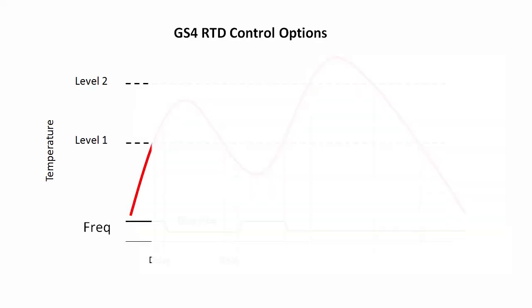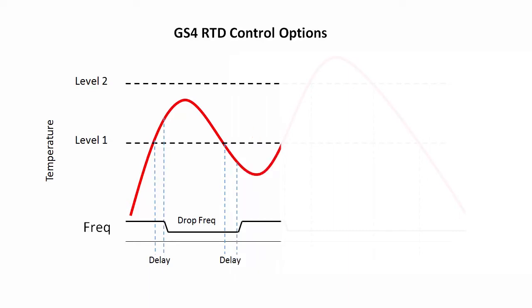When the temperature rises to level 1, which you specify, a delay timer starts. If the temperature is still above level 1 at the end of the delay, the GS4 can drop the motor speed to a value that you set. If the temperature falls back below level 1 for greater than the delay time, then the motor will resume normal operation.